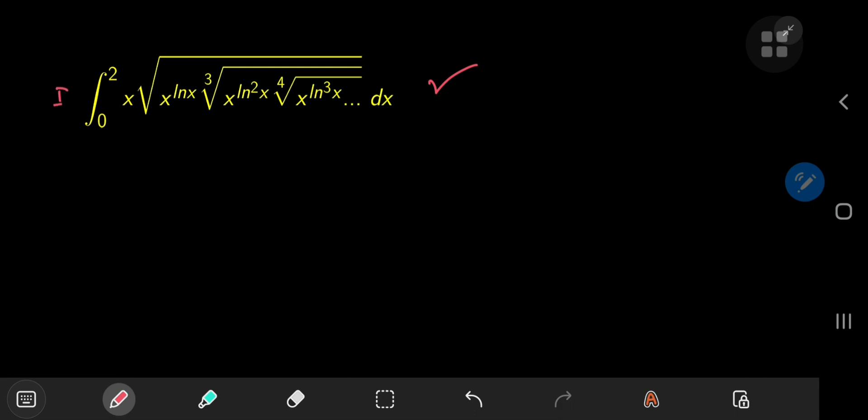So let the integral be called I. And we have x times the square root of x to the natural log of x, the cube root times the cube root of x to the square of the natural log of x, etc.